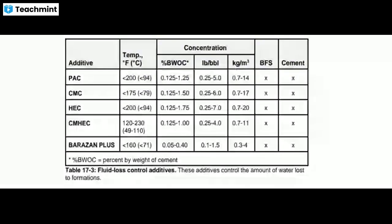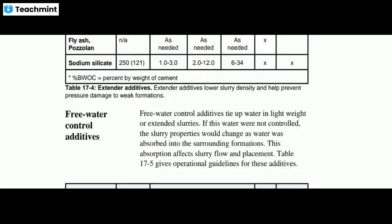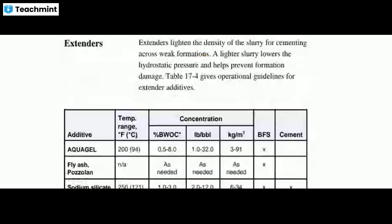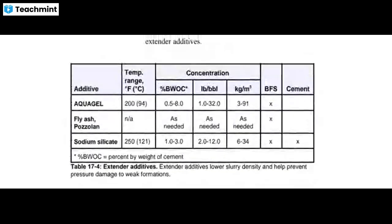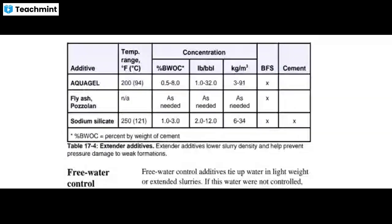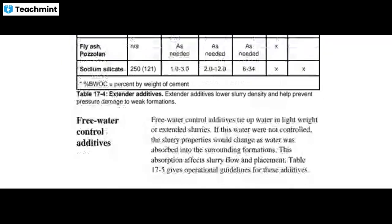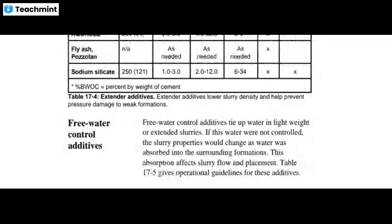Extenders lighten the density of the slurry for cementing across weak formations. A lighter slurry lowers the hydrostatic pressure and helps prevent formation damage. The operation guidelines for extender additives include aqua gel, fly ash, pozzolana, and sodium silicate. Concentration and temperature range are shown. Extender additives lower slurry density and help prevent pressure damage to weak formations.